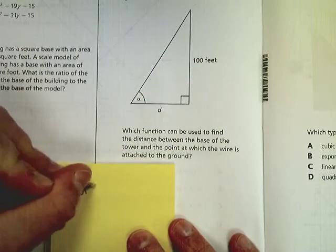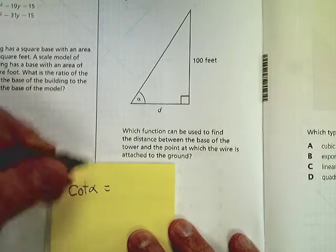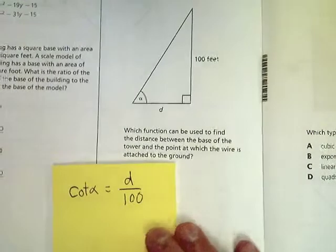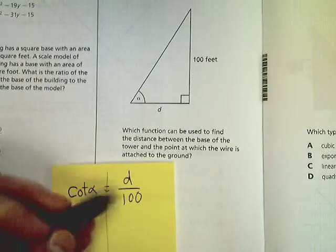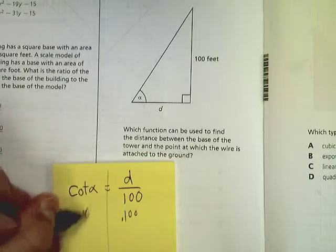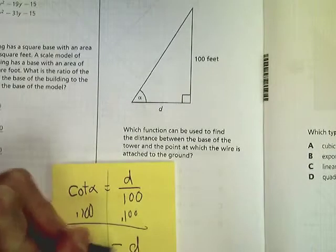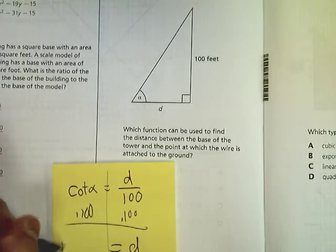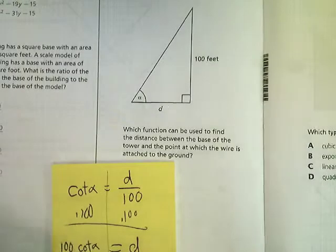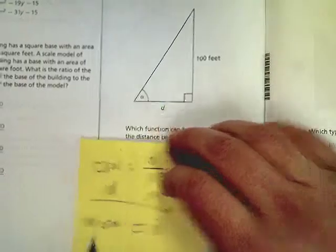Now the cotangent of the angle is going to be equal to d over 100. From here, I just solve it like an equation. What do I do to get rid of it? Divide by 100, I multiply by 100. So in this case, d is equal to 100 times the cotangent of the angle. And I drew a really bad alpha there.